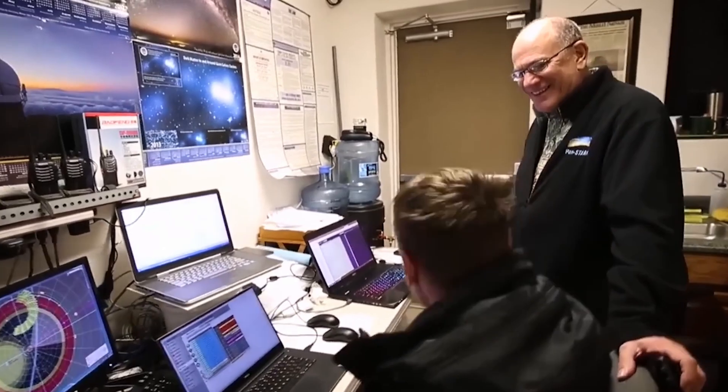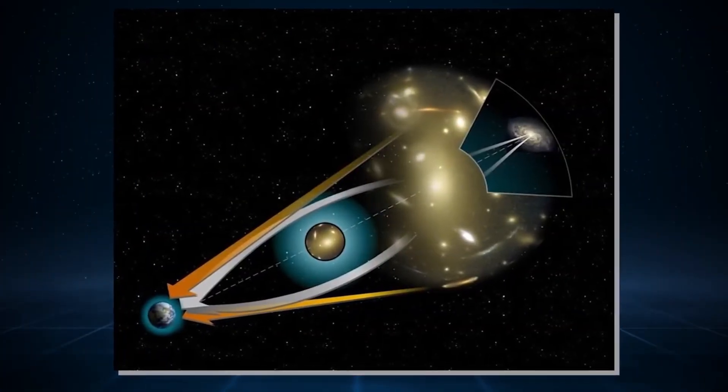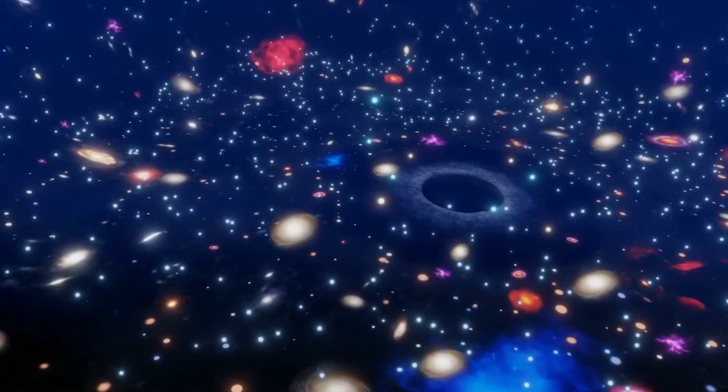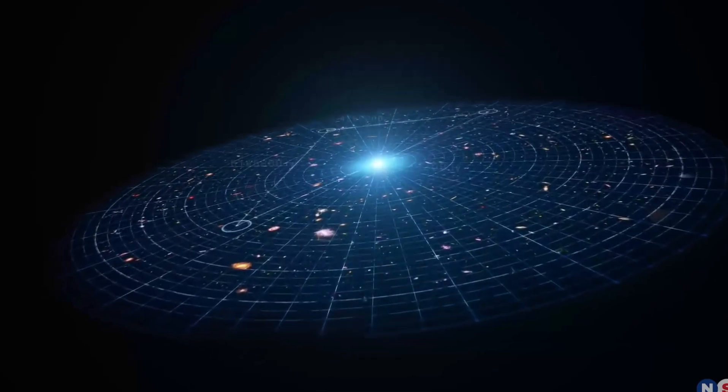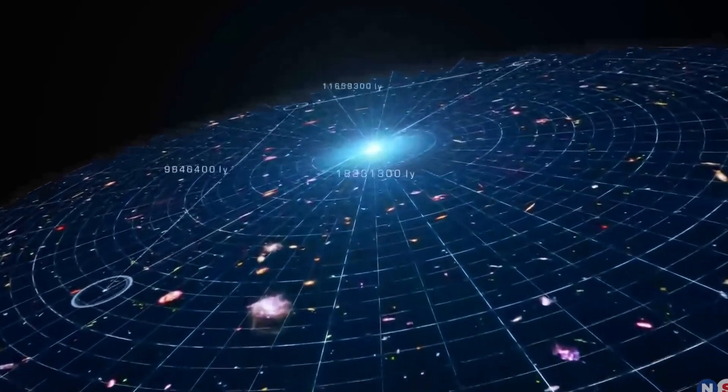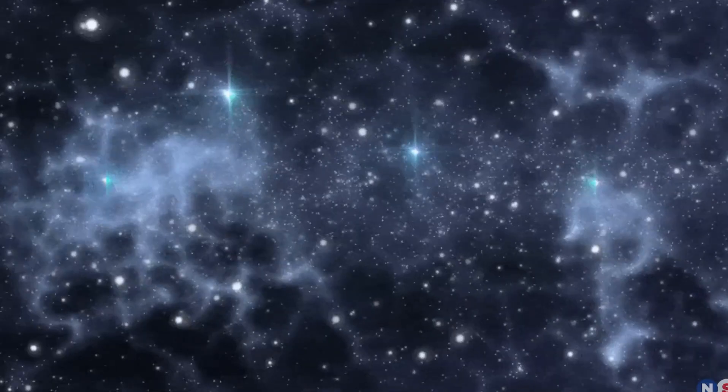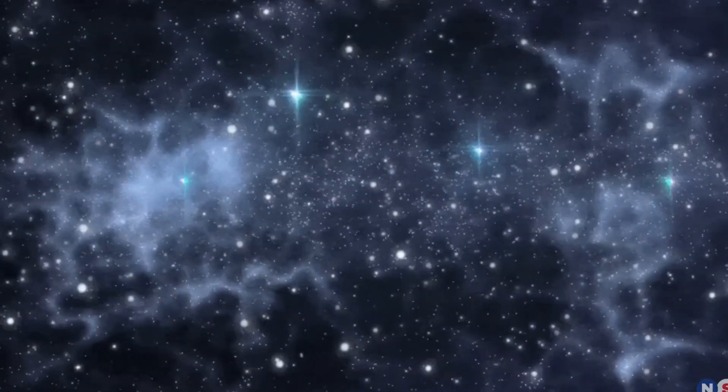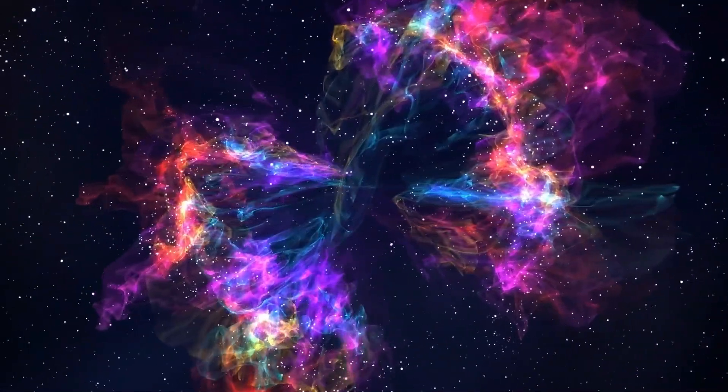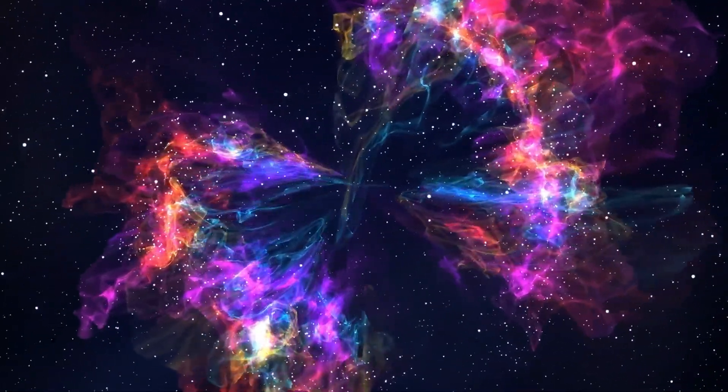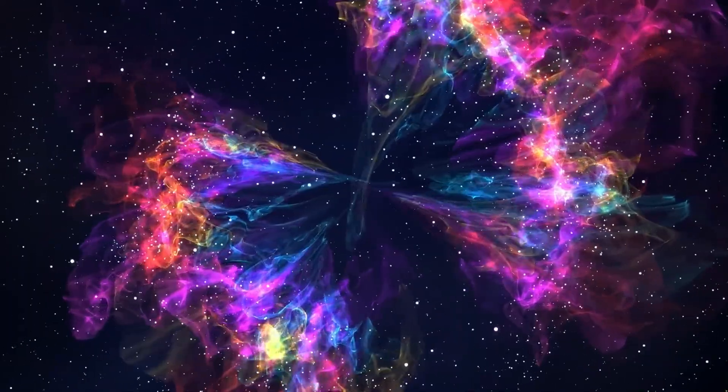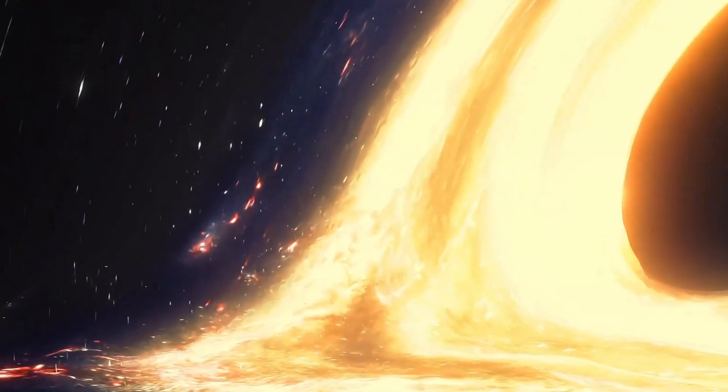The OSIRIS-REx mission, a billion-dollar endeavor launched in 2016, faced unexpected surprises when it arrived at Bennu in 2018. The asteroid, resembling a pile of gravel and rubble, required the team to adapt its landing plan and reprogram the spacecraft for a smaller landing site. Despite these challenges, the OSIRIS-REx team successfully executed the mission, exemplifying NASA's commitment to overcoming obstacles in space exploration.